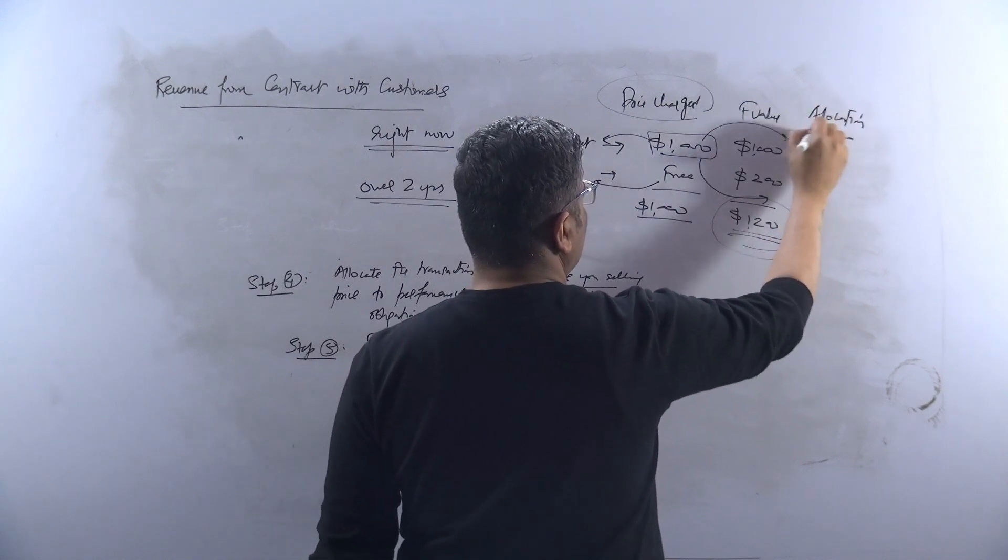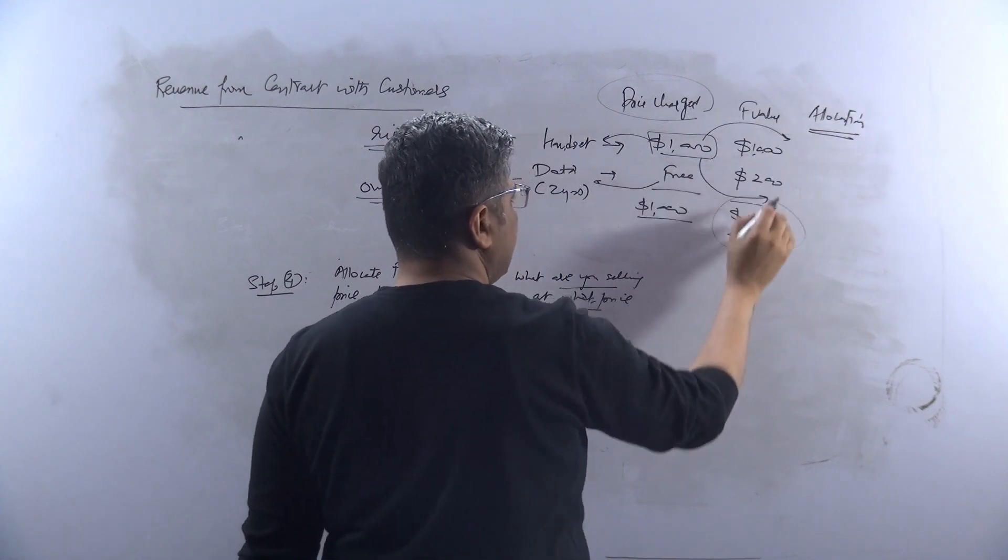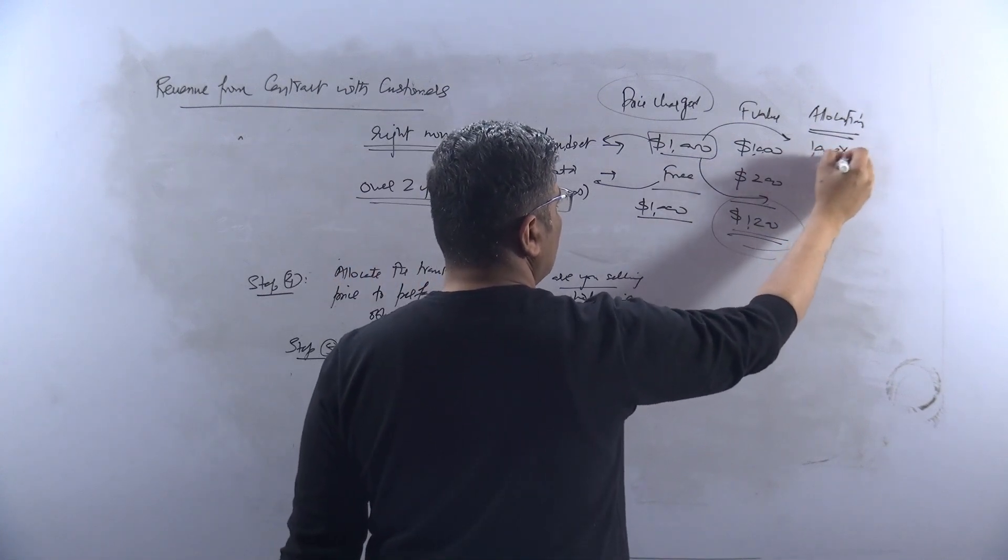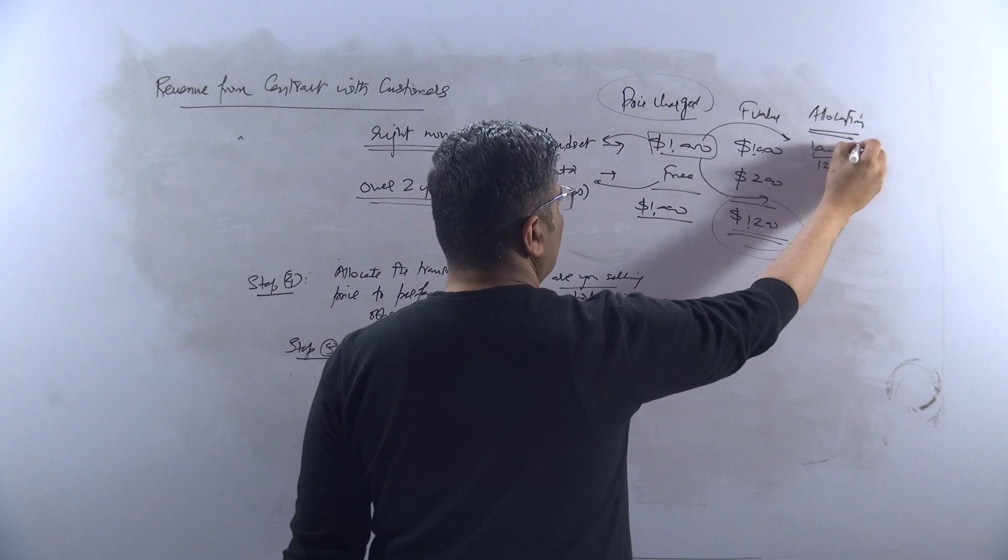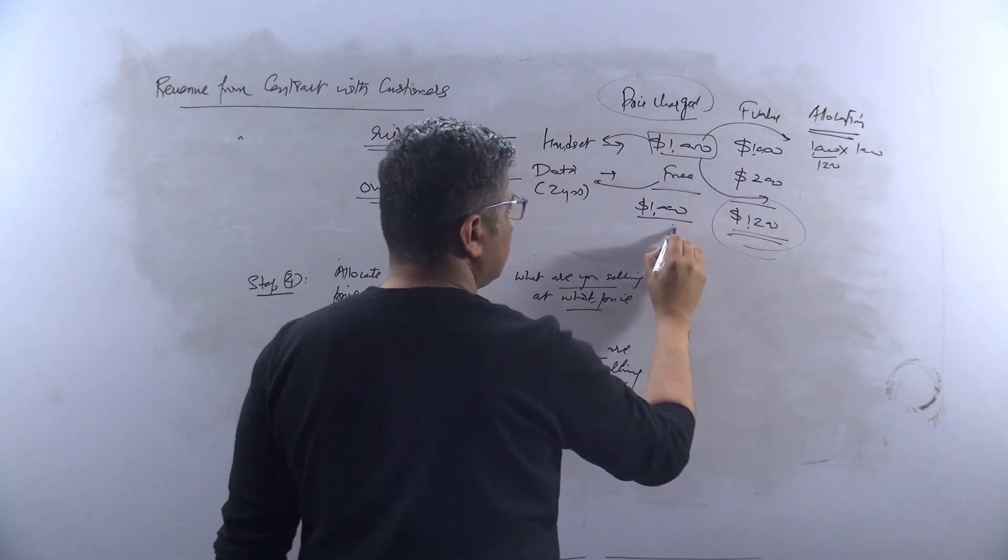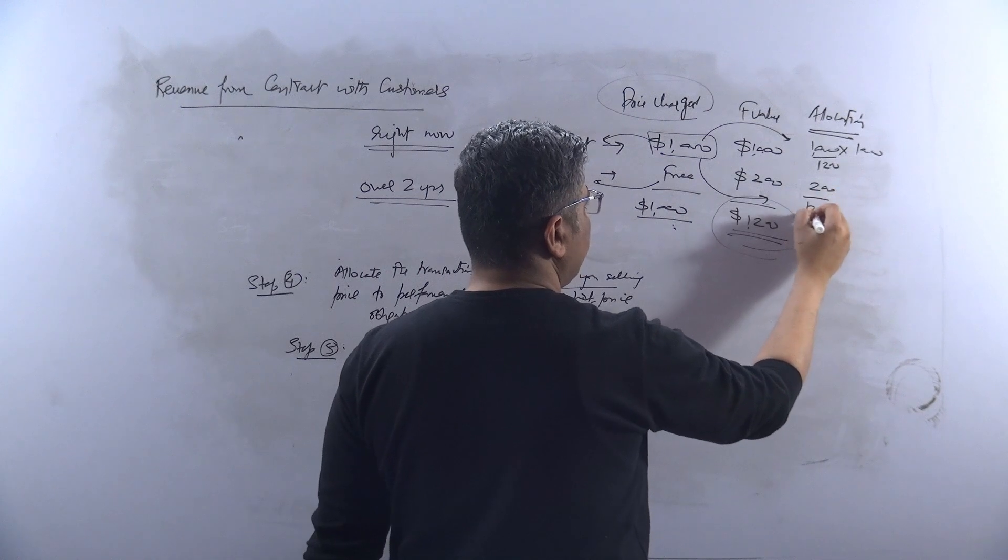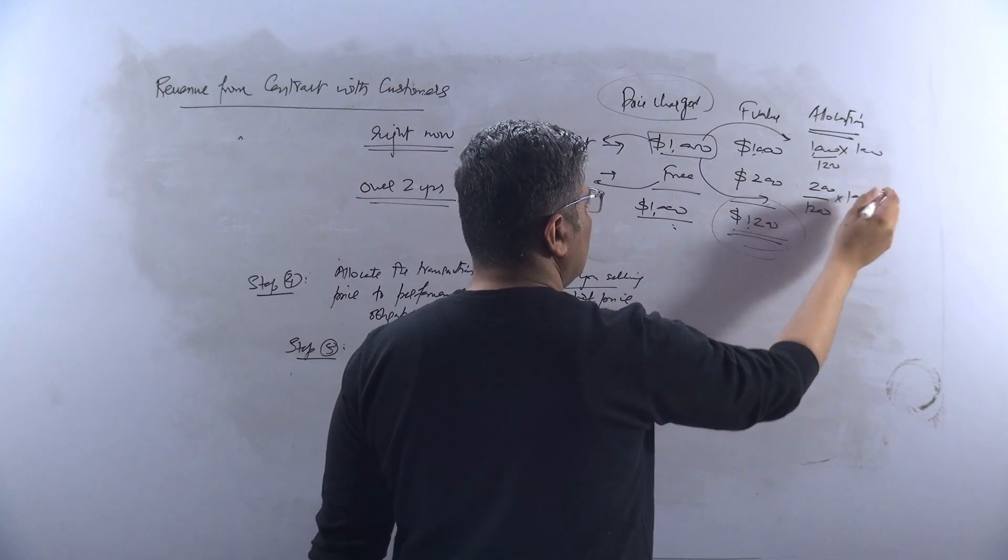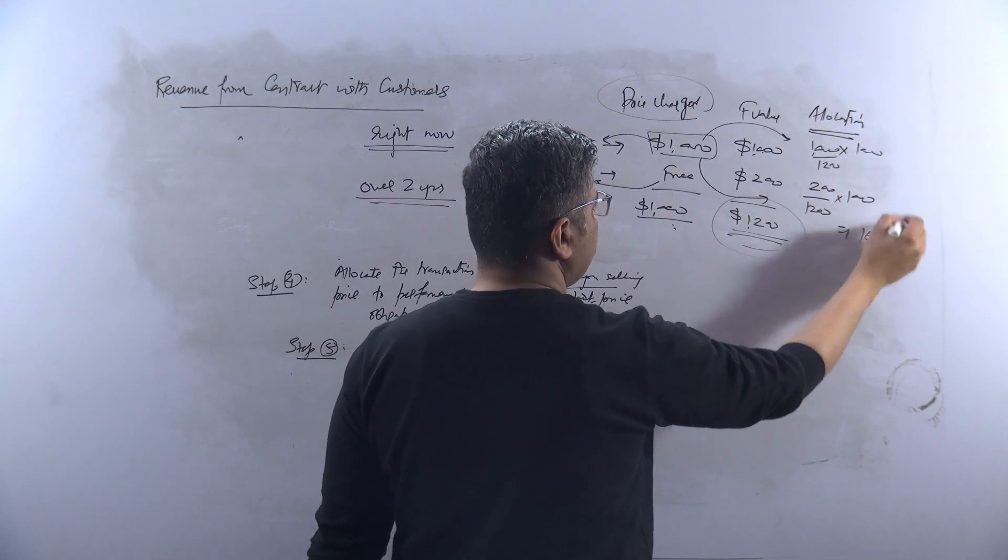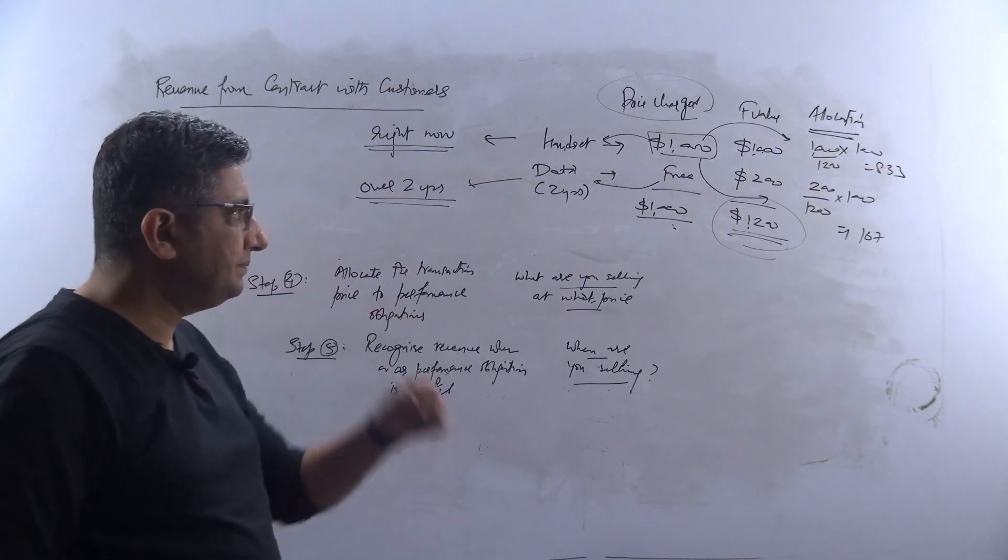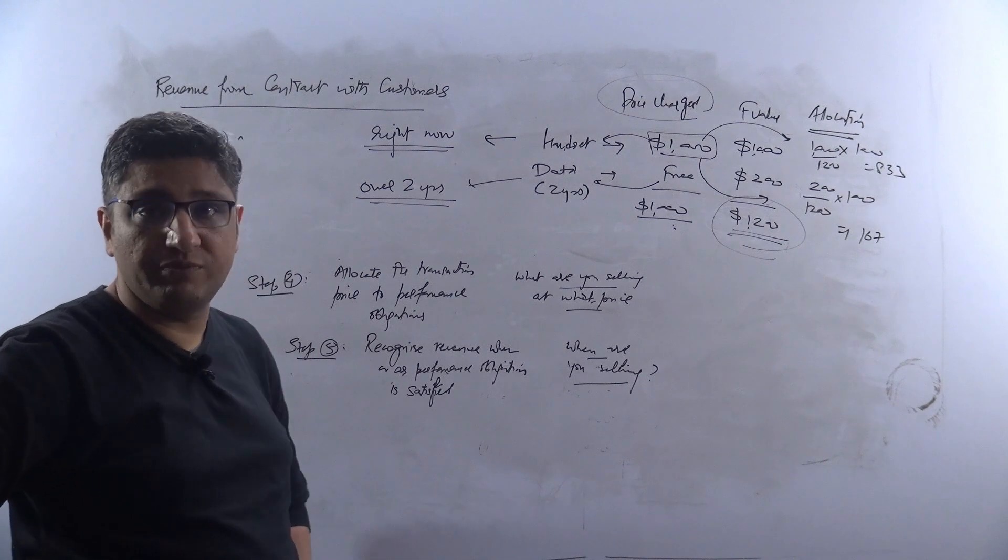Which simply means, if I were to look at the allocated price, I would simply say this is $1,000 over $1,200 into the price. And this one would be $200 divided by $1,200 into $1,000. This would be $167, this would be $833.